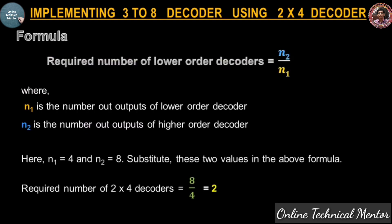Here, n1 = 4 because the 2-to-4 decoder has four outputs, and n2 = 8 because the 3-to-8 decoder has eight outputs. Substituting into the formula: 8 divided by 4 equals 2. That means two 2-to-4 decoders are required to implement one 3-to-8 decoder.